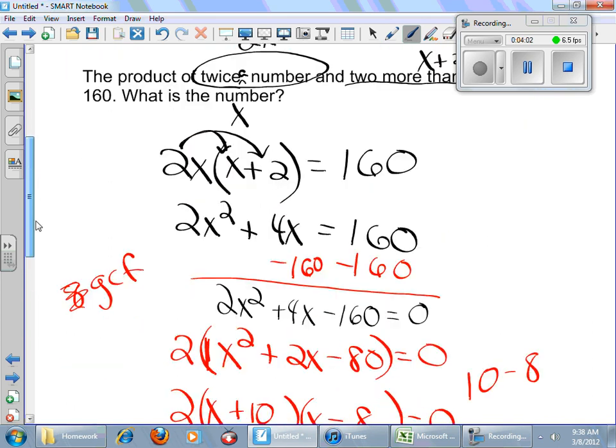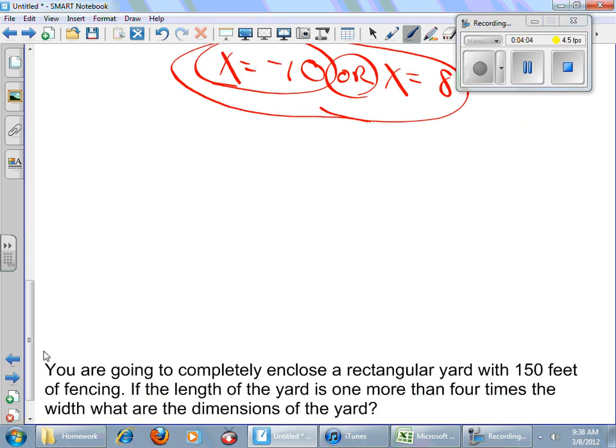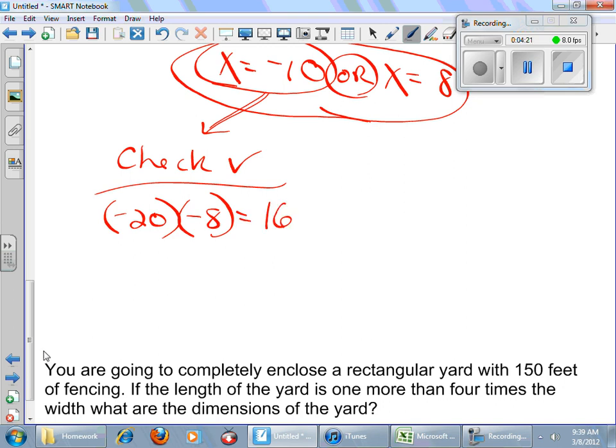Well, let's test it. We know that we have to double the number and then multiply by two more. So let's try it with negative 10. Let's check it right here. All right. So I'm going to double it. So I'm going to get negative 20. And I need two more than negative 10. That would be negative 8, right? 20 times 8 is 160. And negative times a negative is positive. And there you go. It checks. Now let's check it with the 8. All right. I'm going to double it and get 16. Two more than 8 is 10. That equals 160. And it checks again. So it works. Pretty simple.